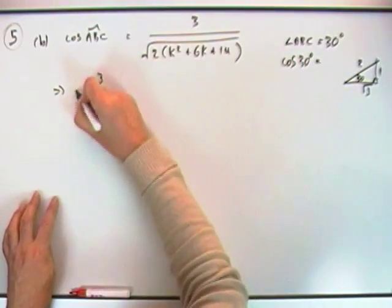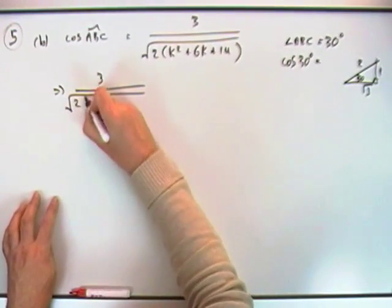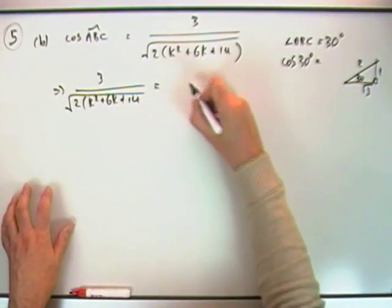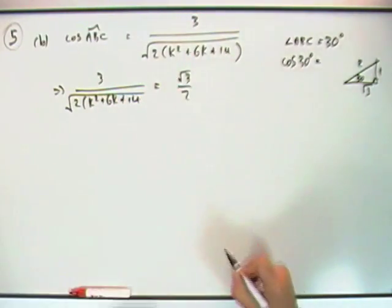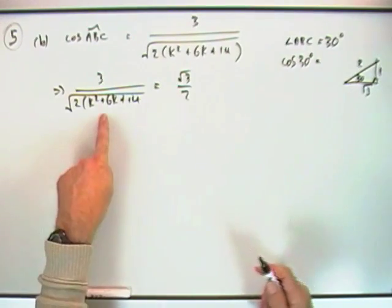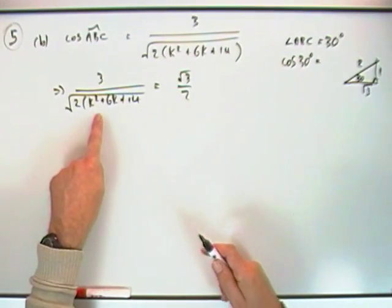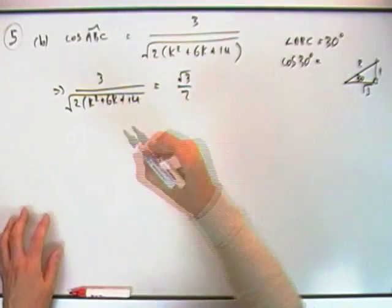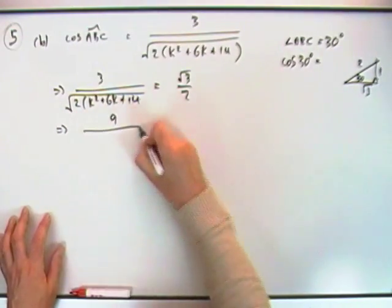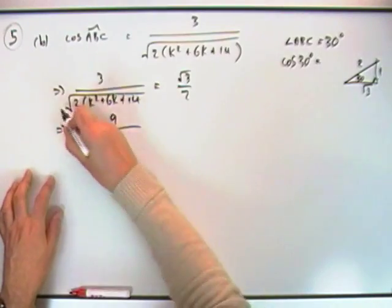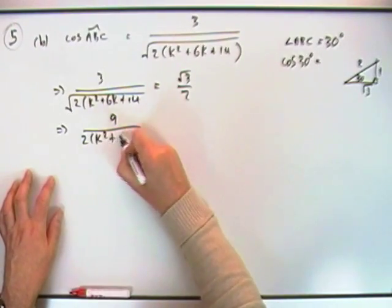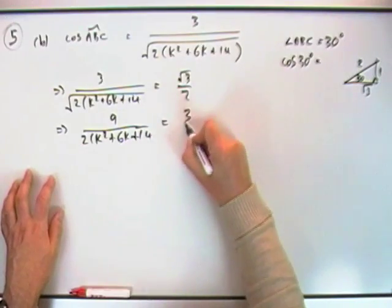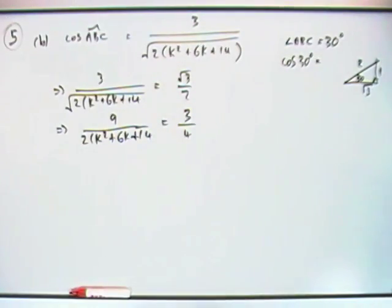That means that expression will equal root 3 over 2. Right, there's two things I don't like here: you've got square roots—square it; you've got fractions—multiply by them. So square it: I've got 9 over (that square root just disappears upon squaring) equals 3 over 4. That's looking better now.